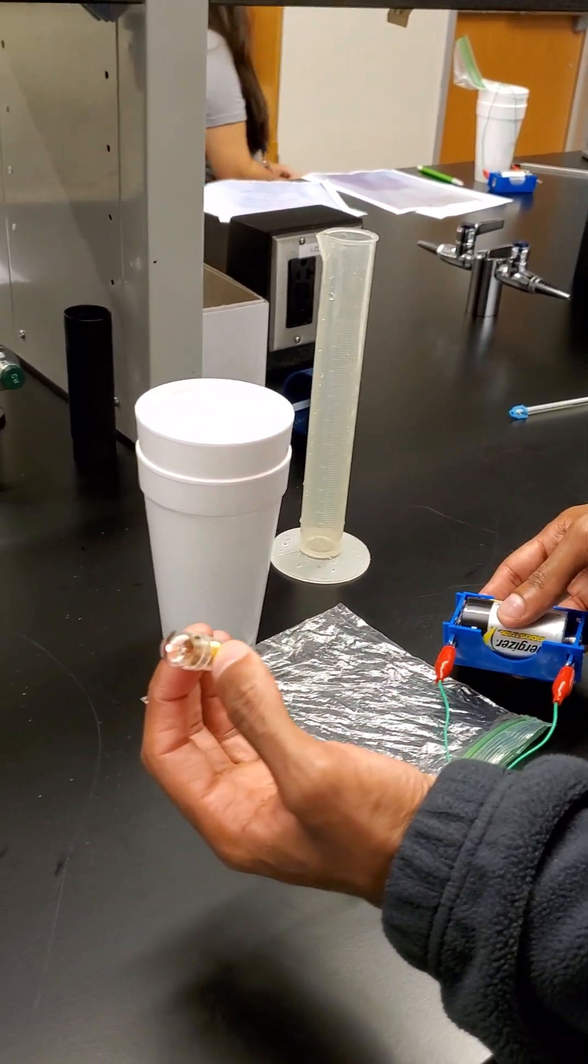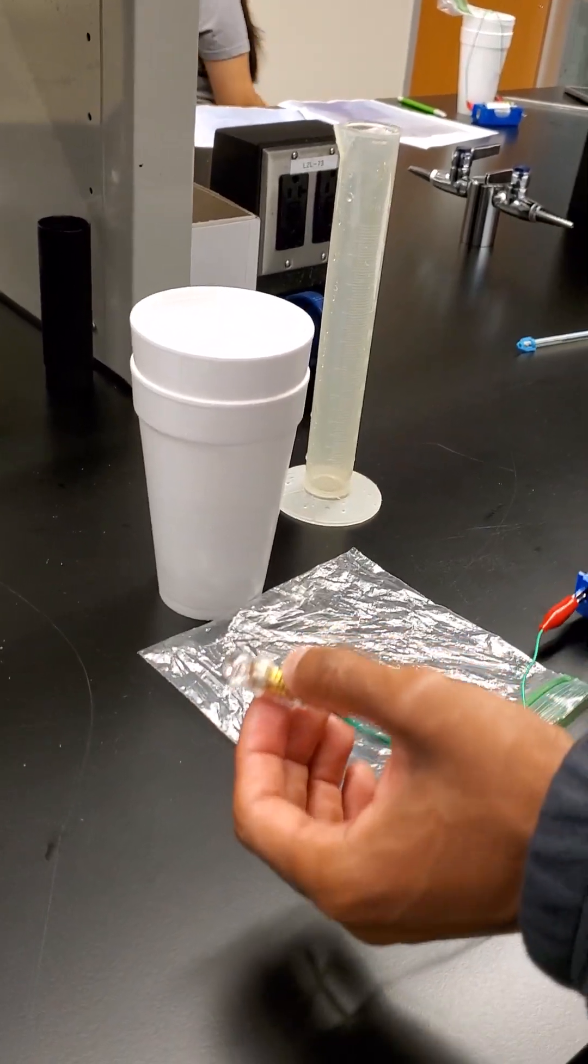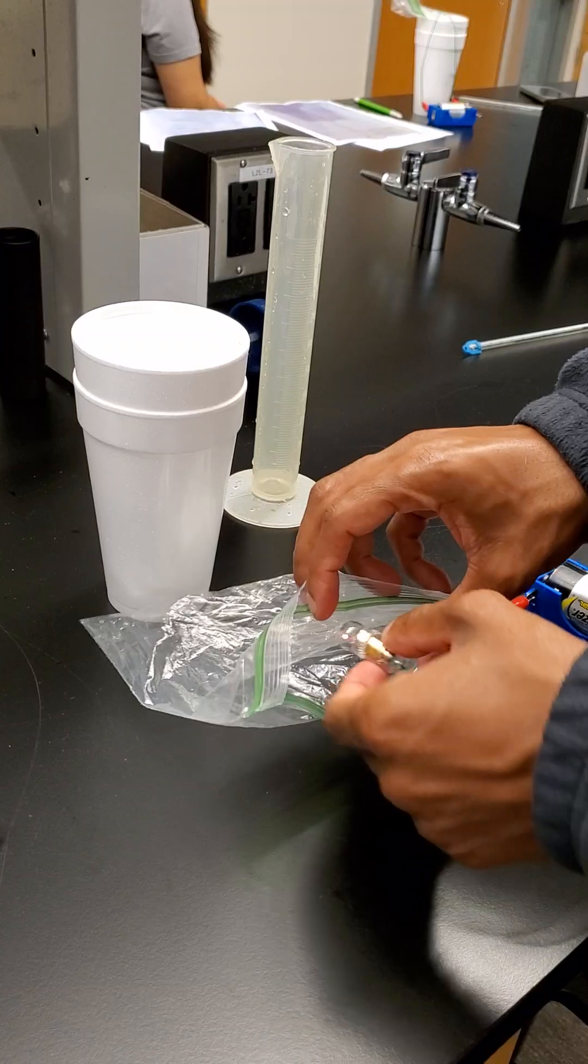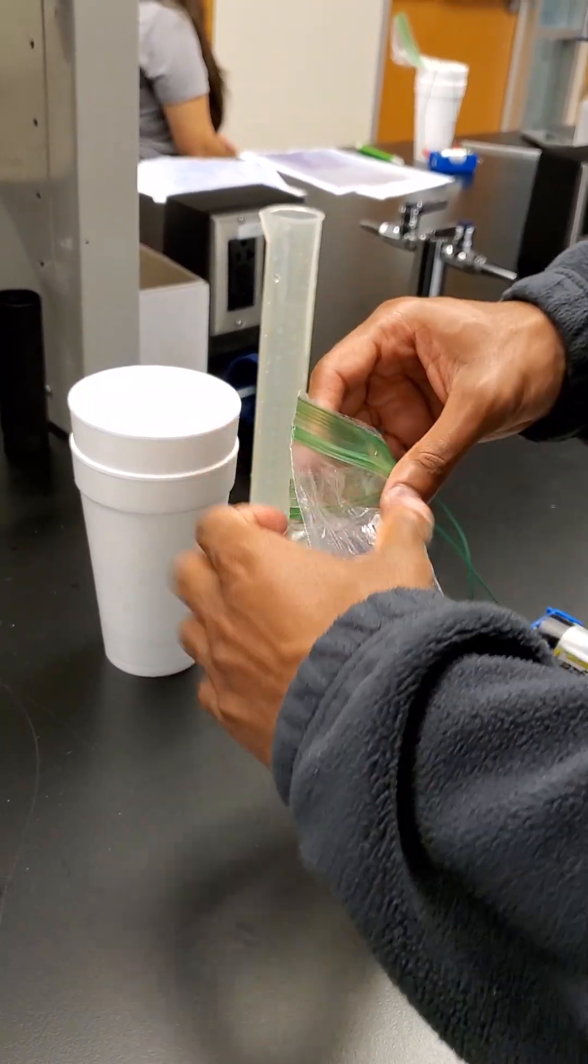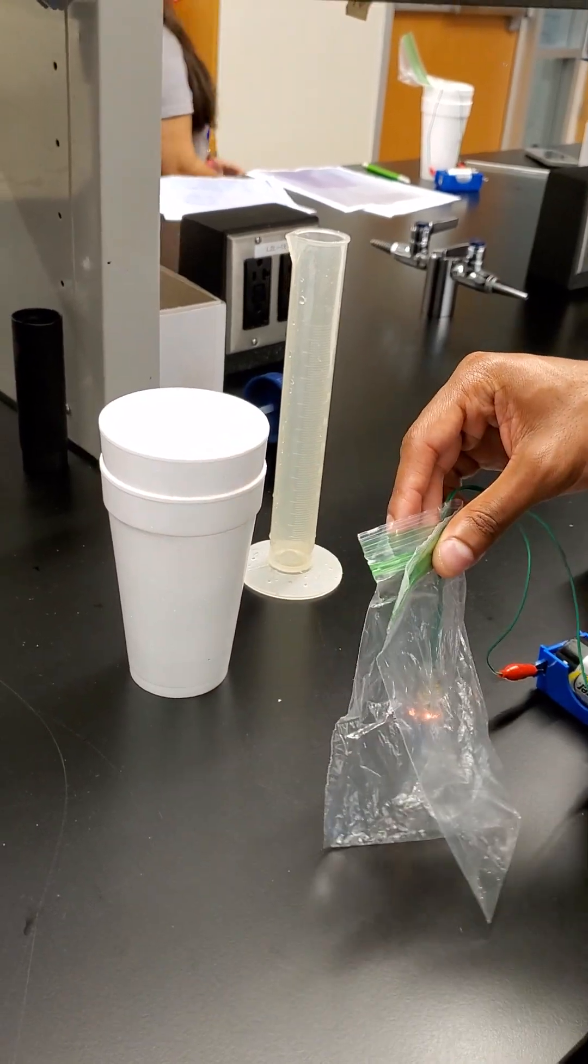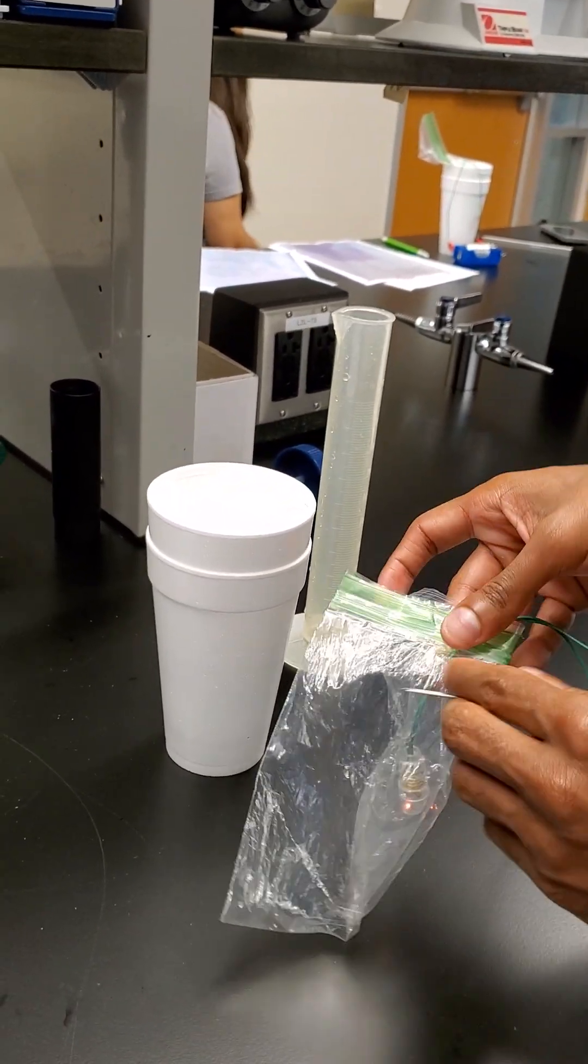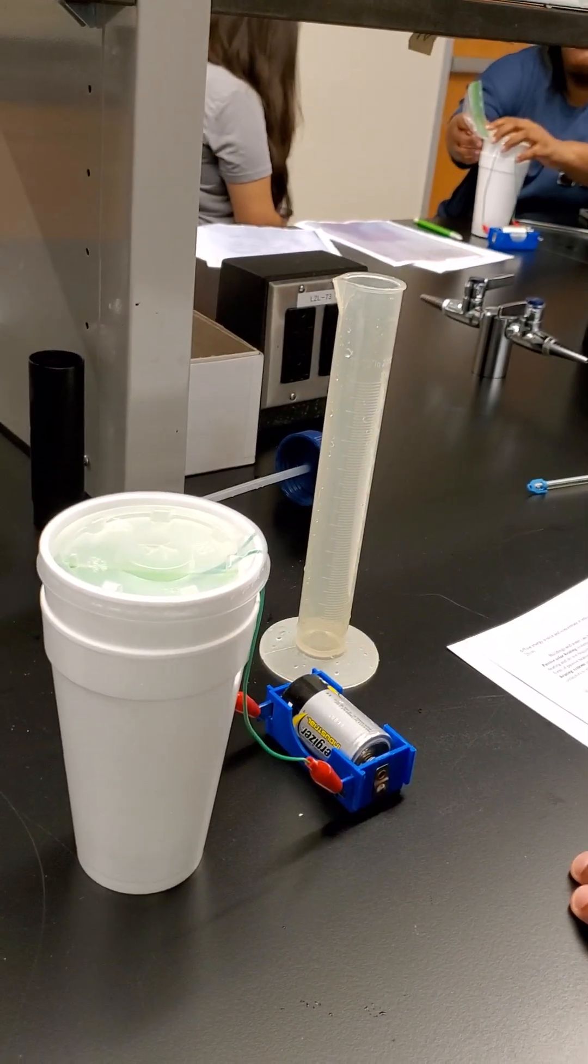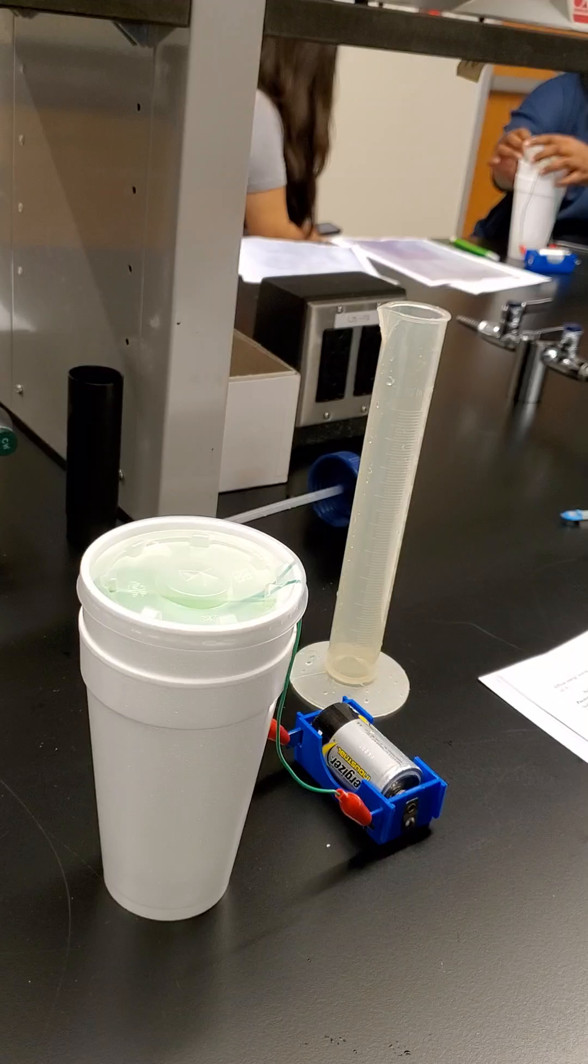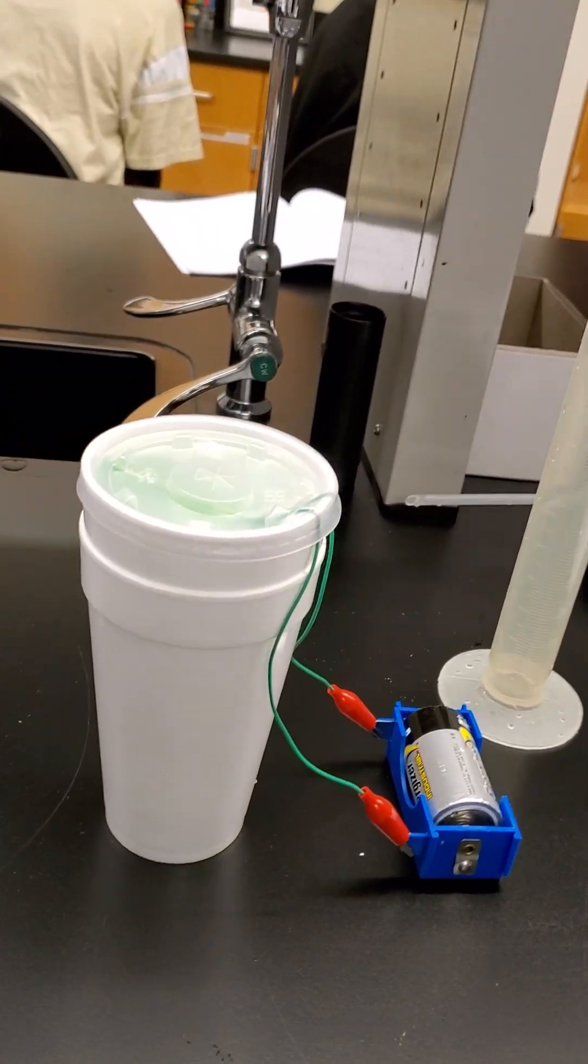We are going to place this light bulb in the ziplock, and the whole thing will be placed inside the styrofoam cups. The whole thing was set up, the lid of the styrofoam was closed, and now we see this is our calorimeter, a simple calorimeter.